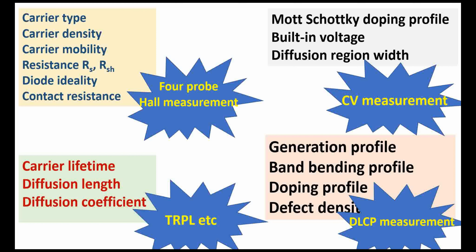Some of the electrical characterization techniques for solar cells include four-probe or Hall measurement, which can give us information about carrier type, sheet resistance, and resistance. Similarly, we have capacitance-voltage (CV) measurement, TRPL, and deep-level capacitance profiling — all electrical characterization methods for solar cell materials.